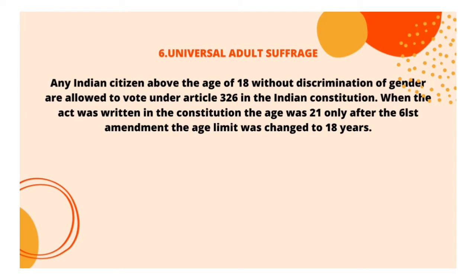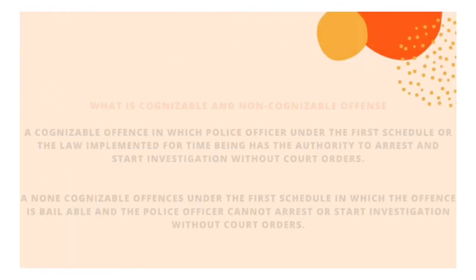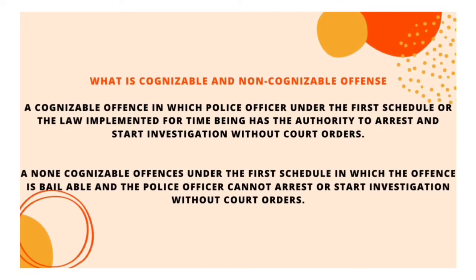Under Universal Adult Suffrage, any Indian citizen above the age of 18, without discrimination of gender, is allowed to vote under Article 326 of the Indian Constitution. When the Constitution was originally written, the age was 21, but after the 61st Amendment, the age limit was changed to 18 years.